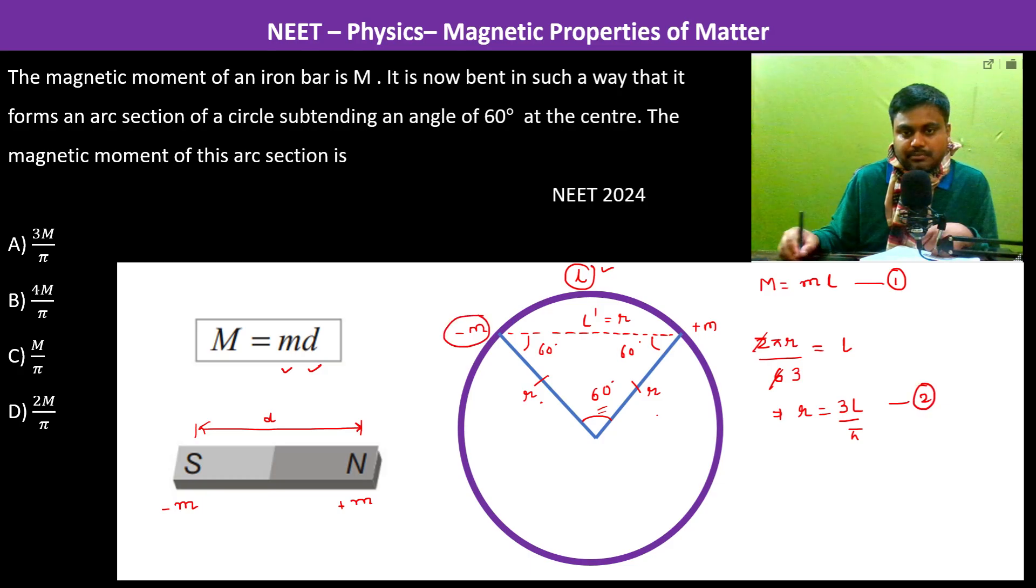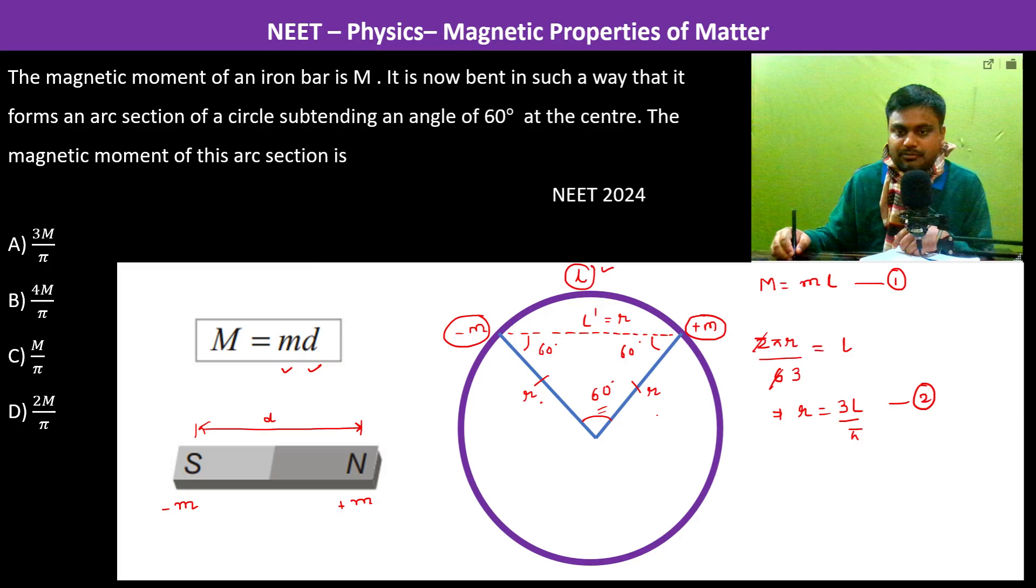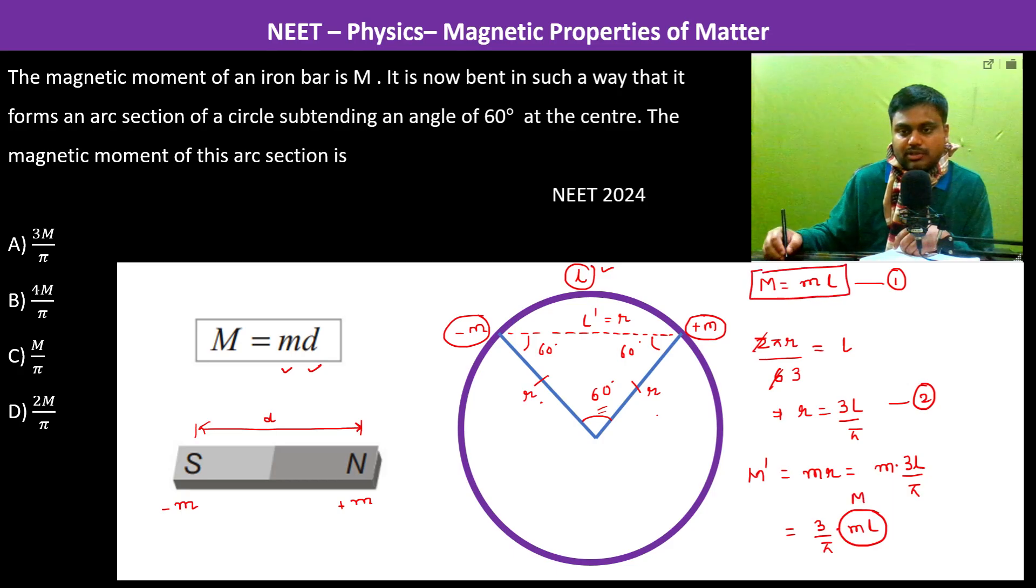Now since minus m and plus m are separated by a distance r, therefore the new magnetic moment becomes m into r, which is m into 3l upon pi, which is equal to 3 by pi into ml. And this ml is capital M from the first equation, so therefore this is 3M by pi. So therefore the answer is going to be A.